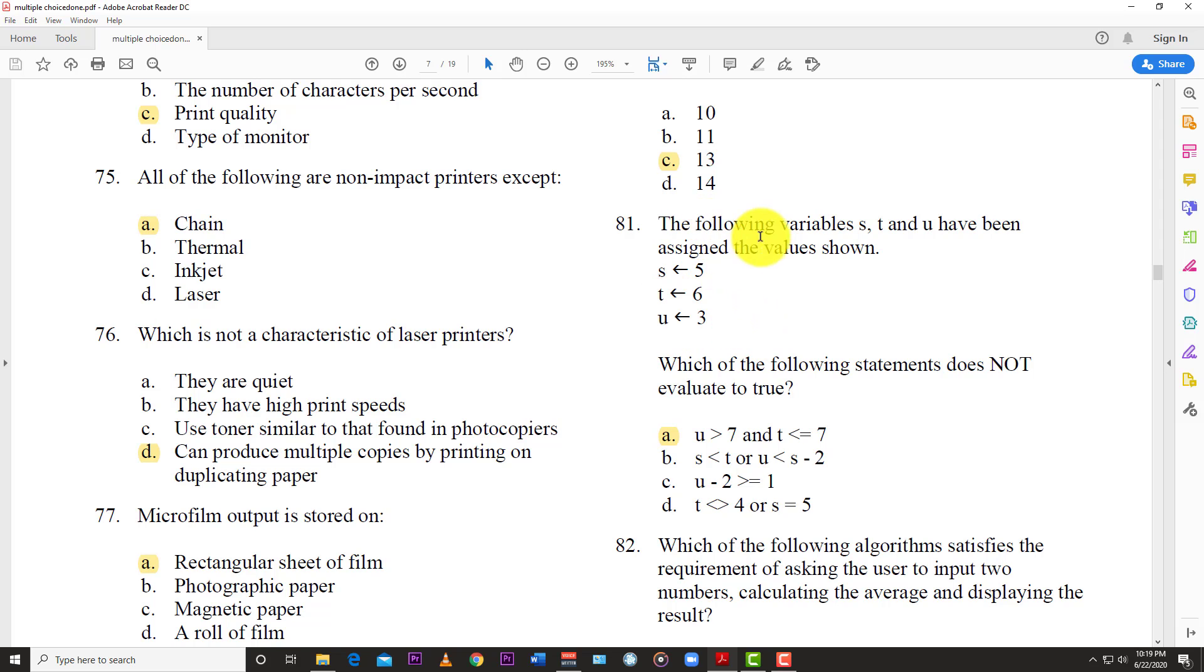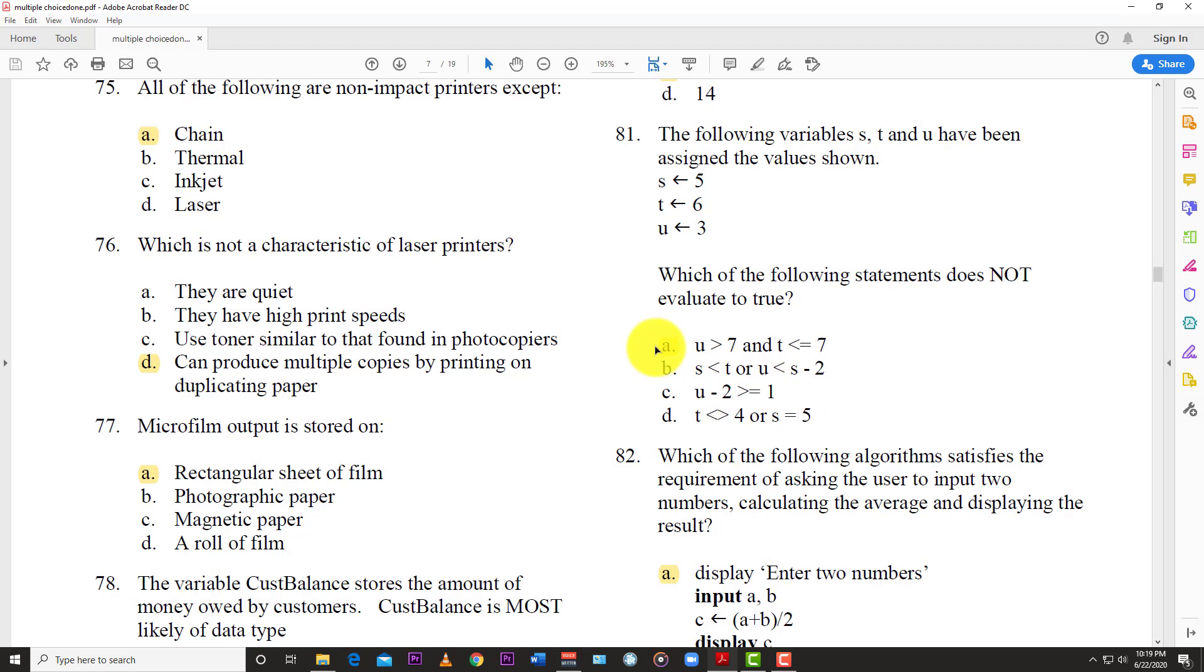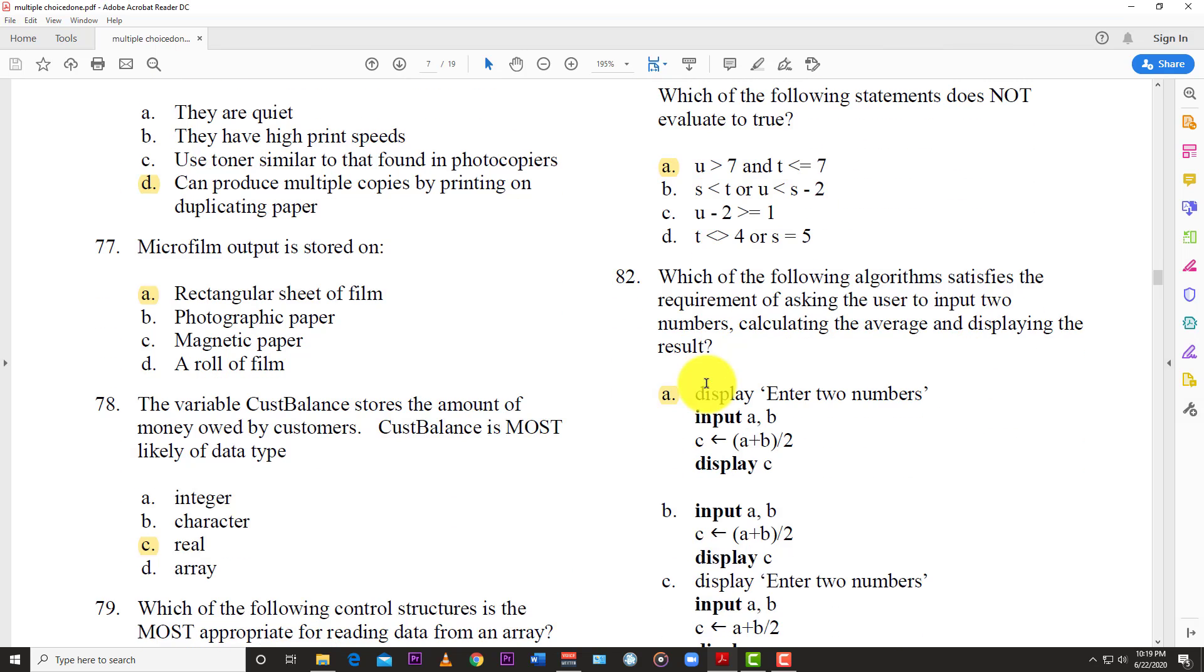Number 81: The following variables S, T, and U have been assigned the values shown. So you have S 5, T 6, U 3. Which of the following statements does not evaluate to true? And so the answer here is A, which says U is greater than 7 and T is less than or equal to 7. So that's the answer right there, A.